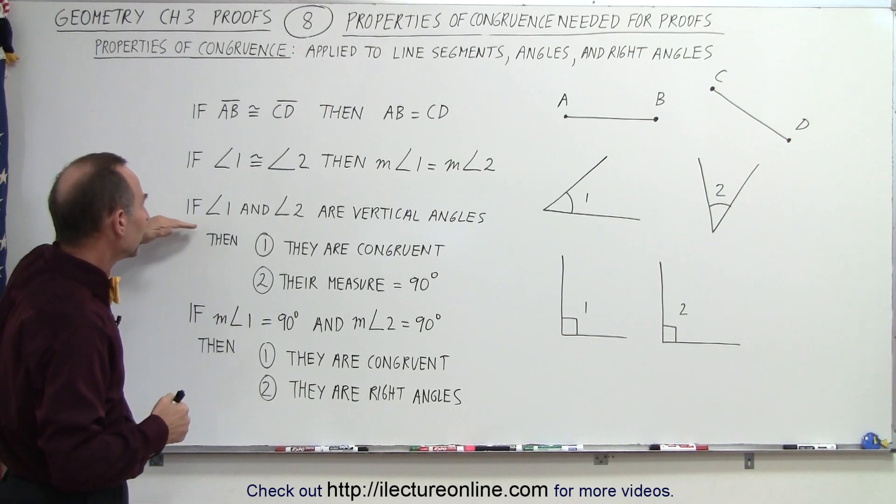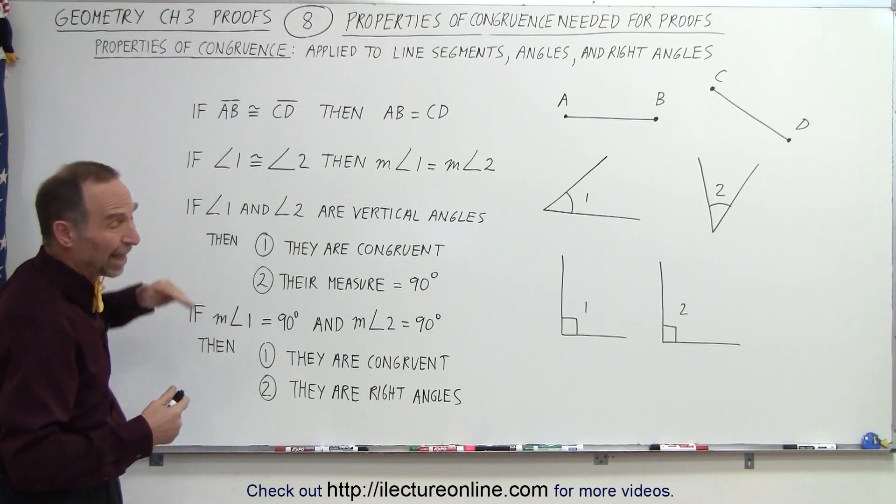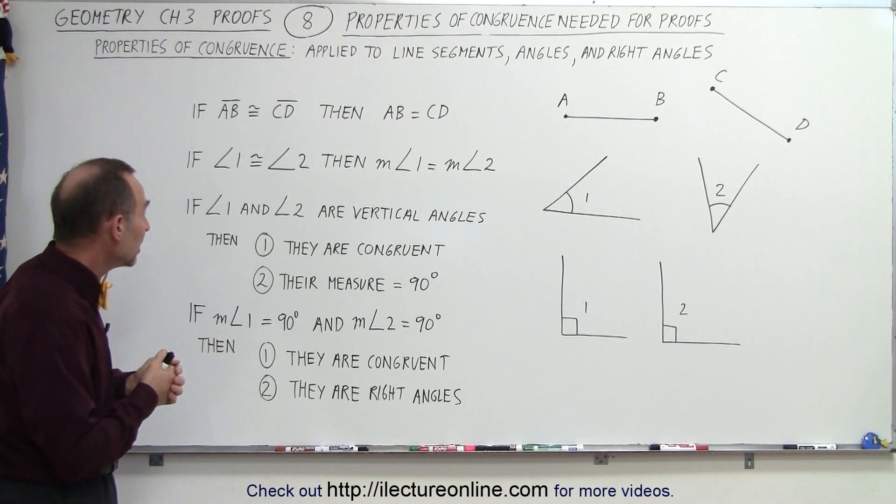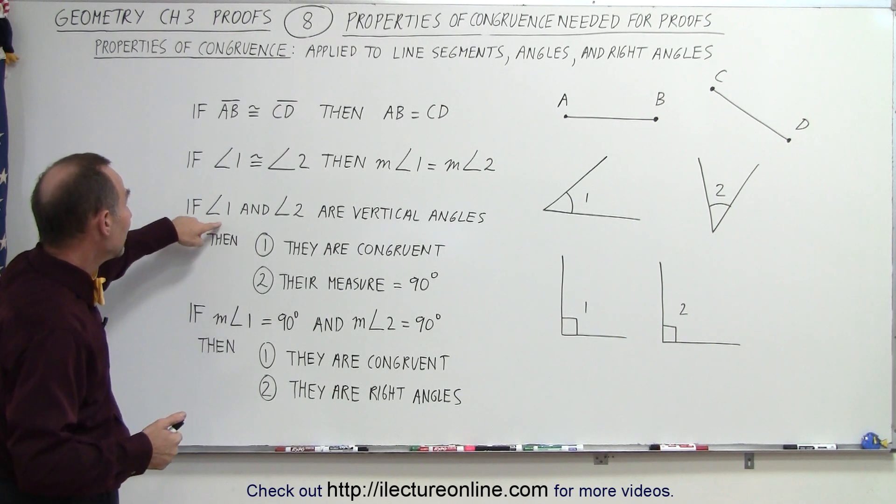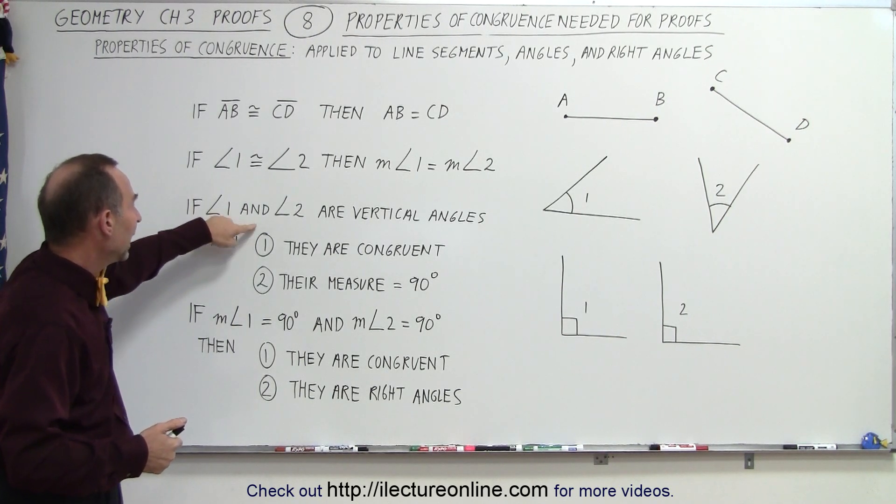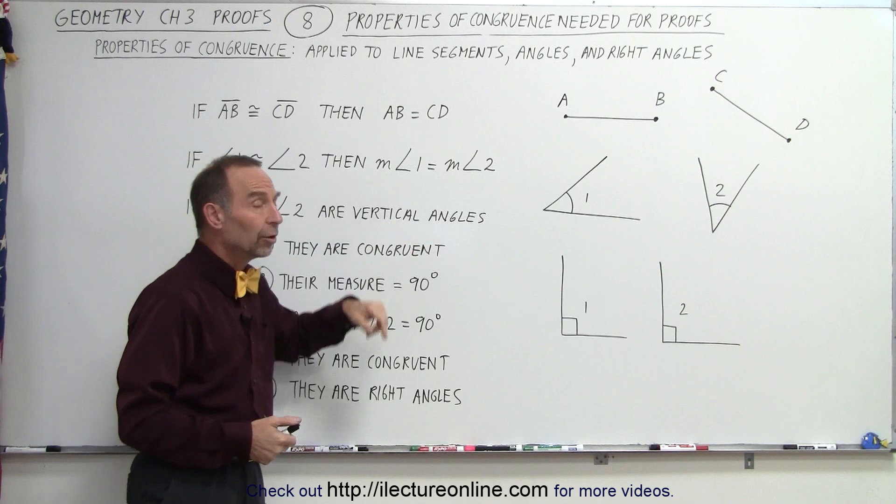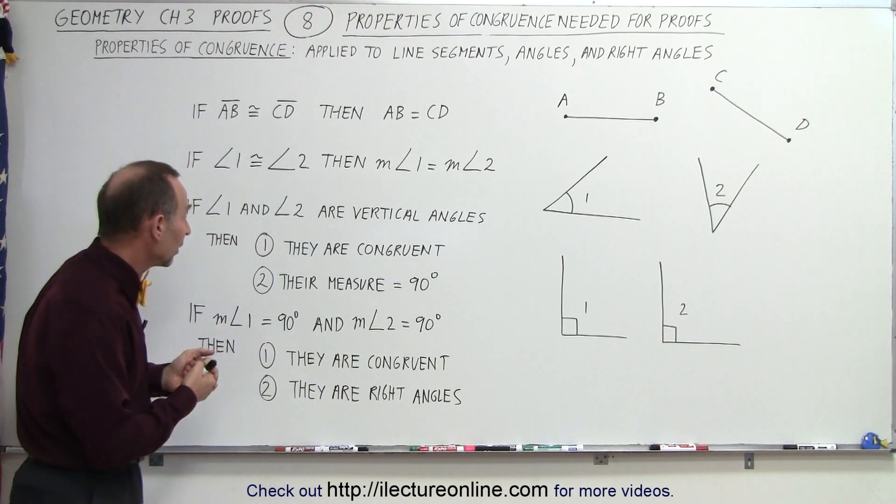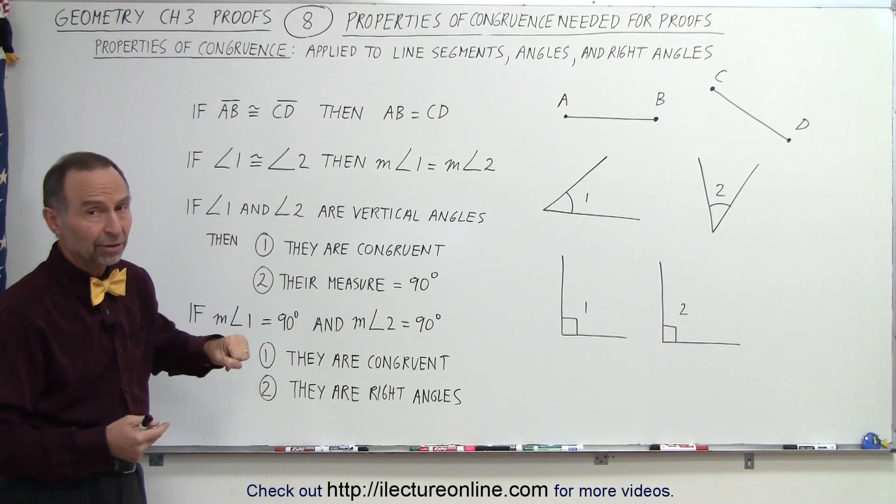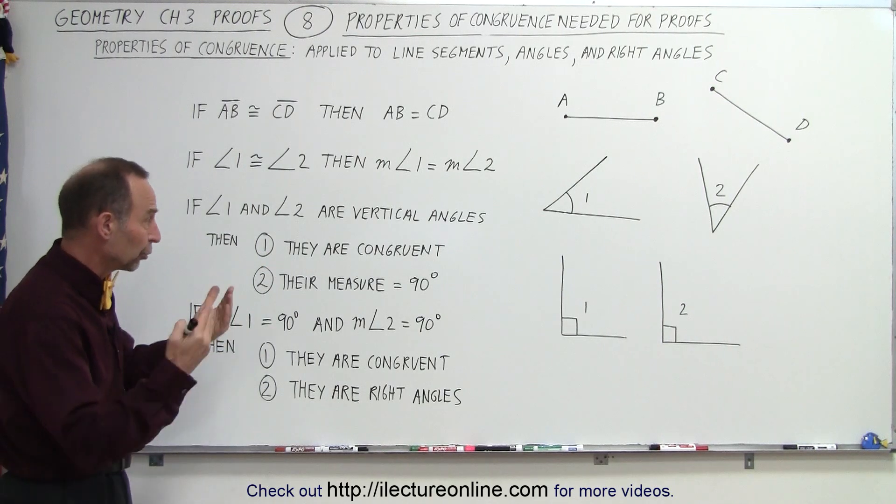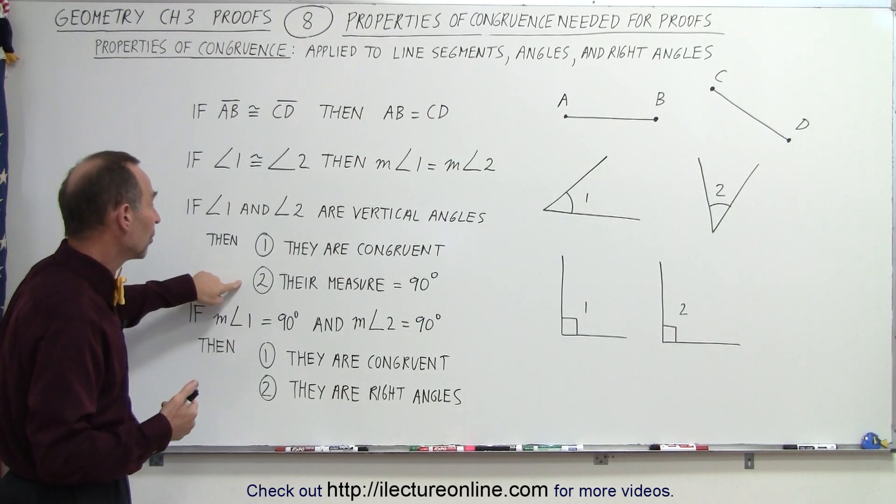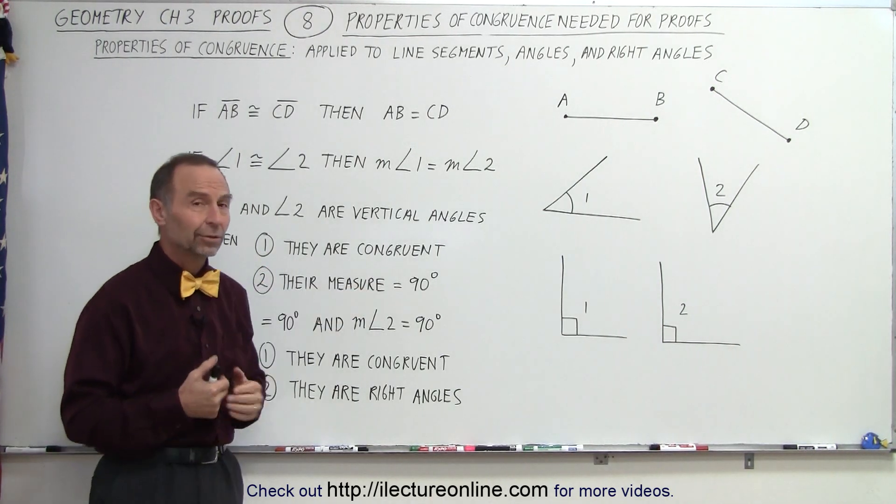In particular, if we apply this to right angles, angles measuring 90 degrees: if angle 1 and angle 2 are right angles, we can conclude two things. First, they're congruent. All right angles are congruent to one another, and their measure equals 90 degrees.